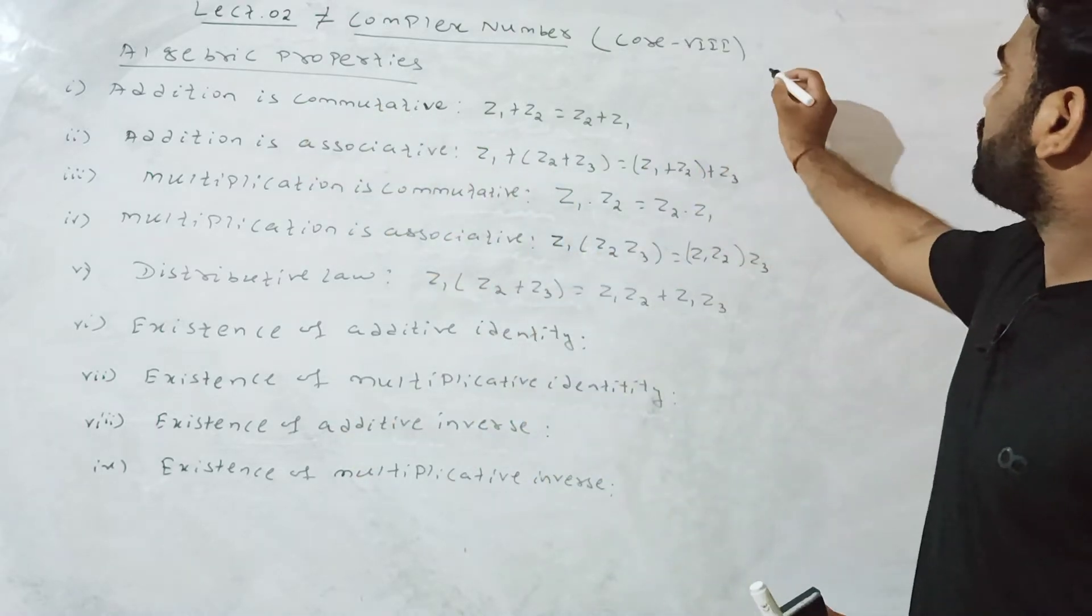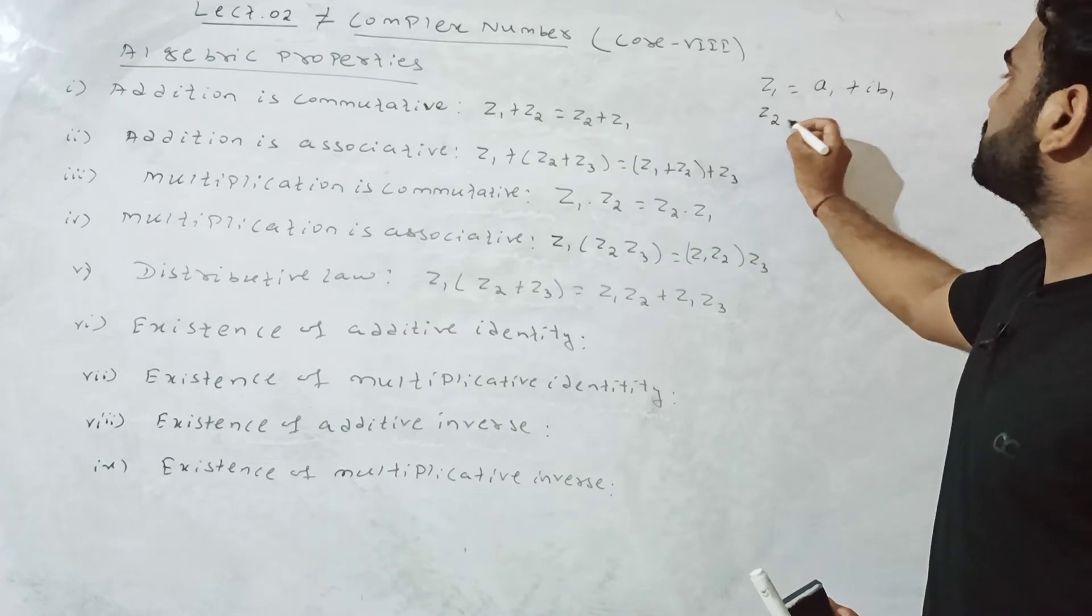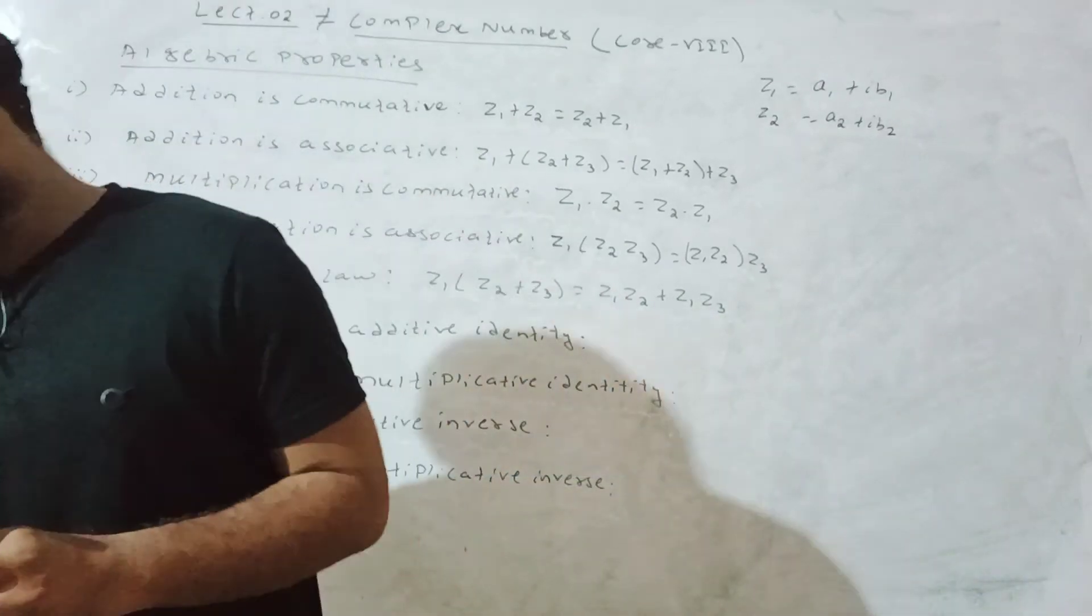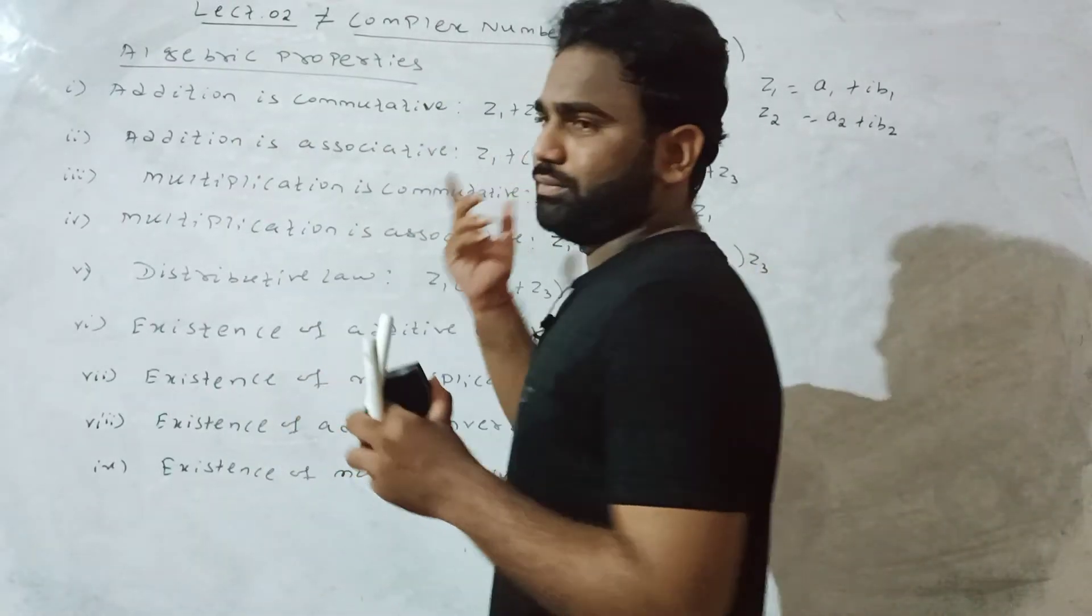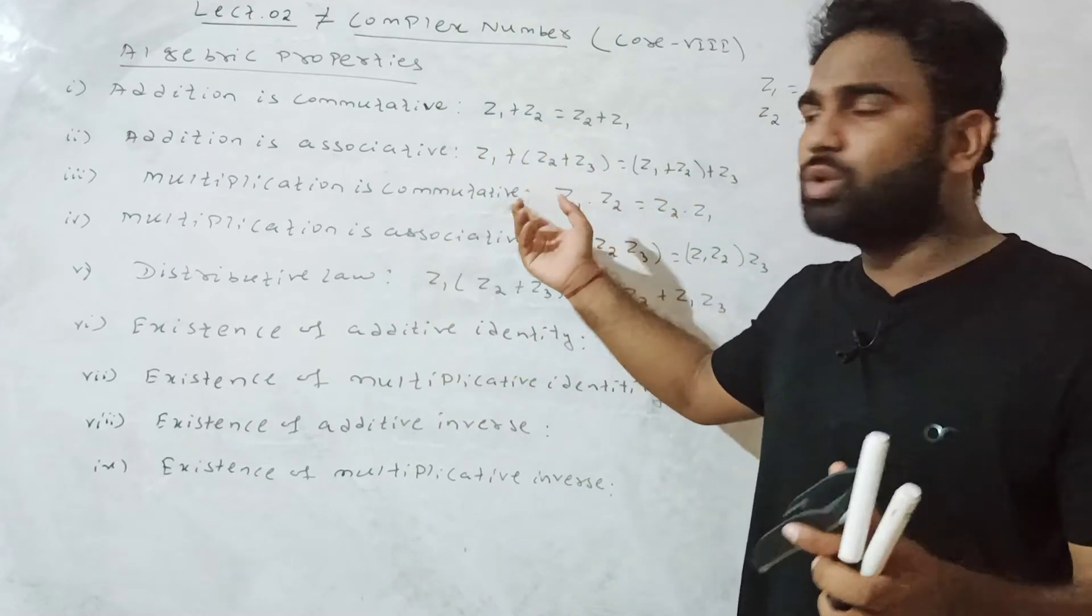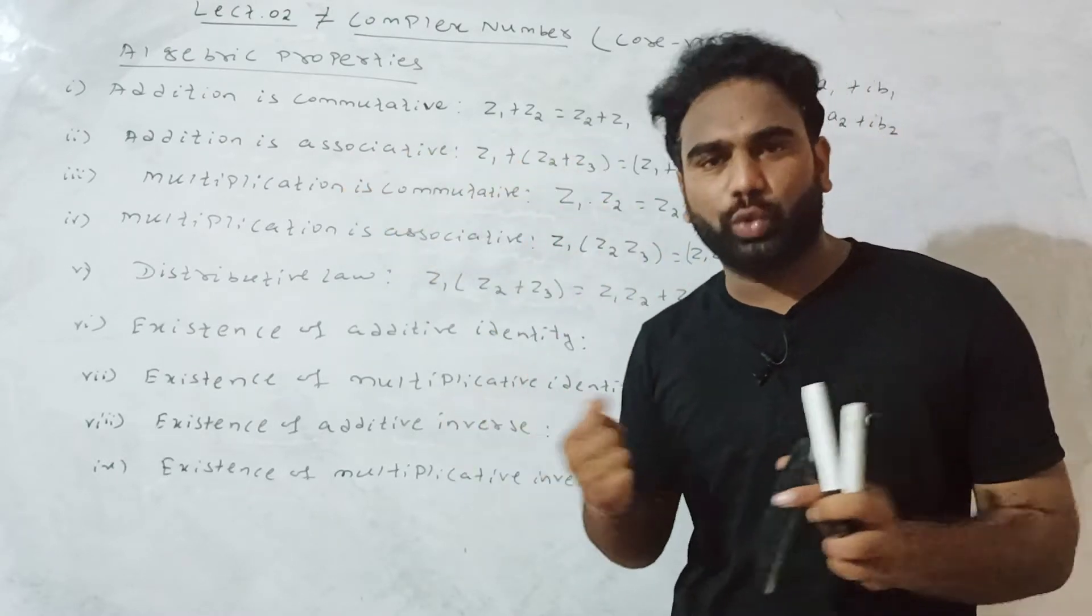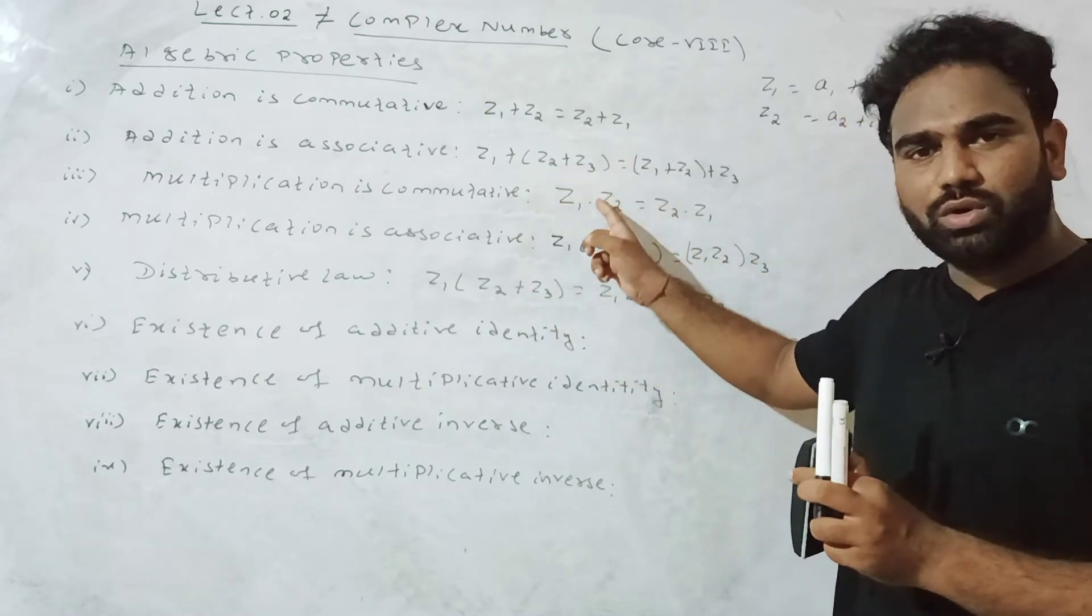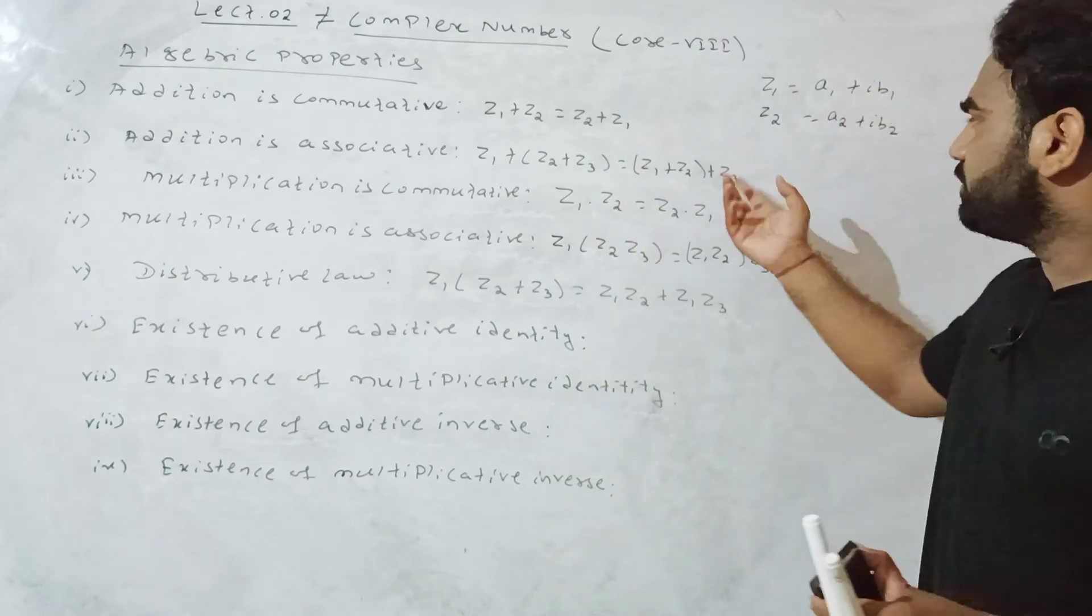Let z1 equal a1 plus i b1, and z2 equals a2 plus i b2. These are complex numbers. We can show that addition is commutative.